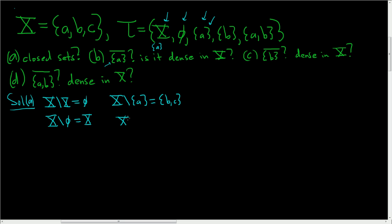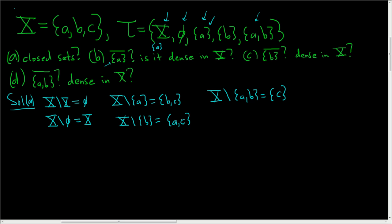Then X set minus {B} gives all elements in X except B, so A and C. And last but not least, X set minus {A, B} gives everything in X except A and B, so it's going to be the singleton set containing C. So these are the closed sets. To find the closed sets, all you do is take the complements of the open ones.